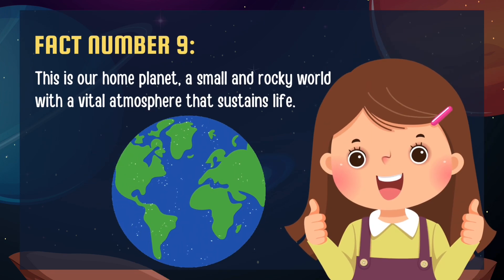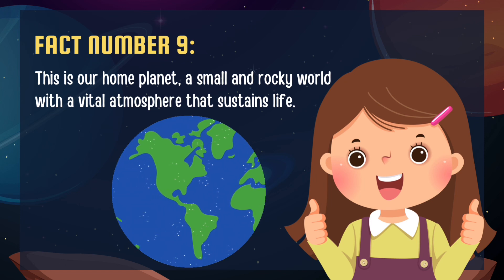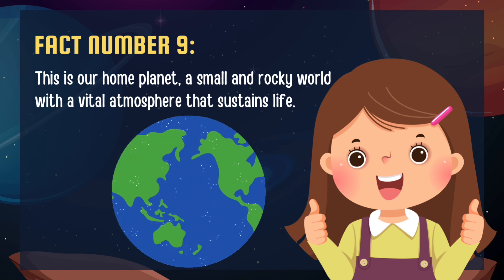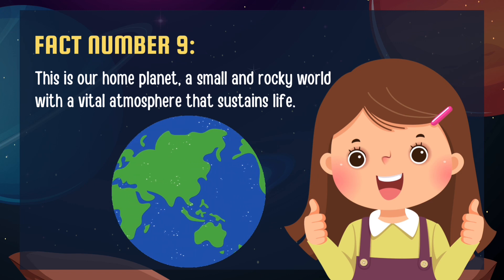Number 2 takes us to the moons of our solar system. Did you know that some planets have many moons while others have none? These moons come in all shapes and sizes.